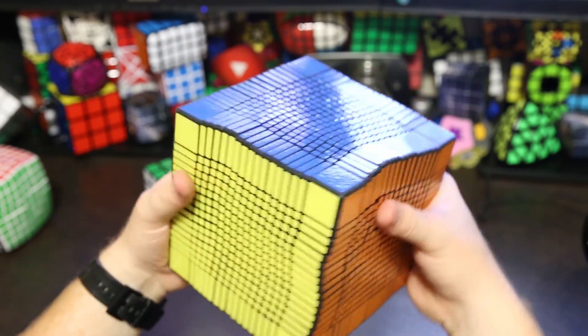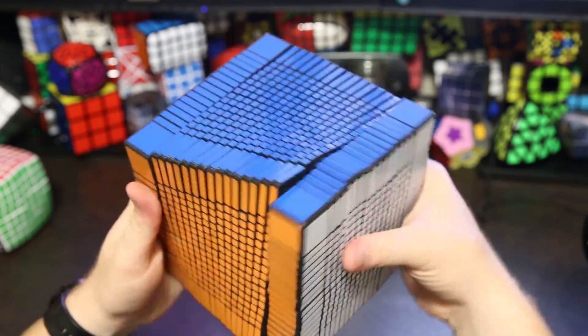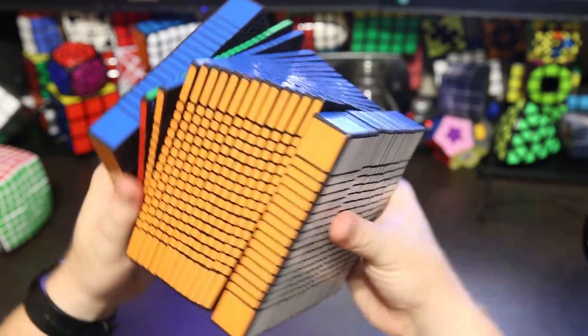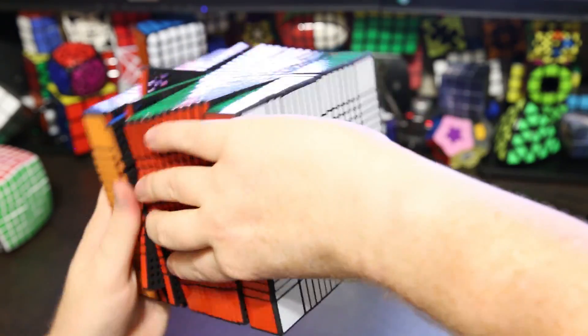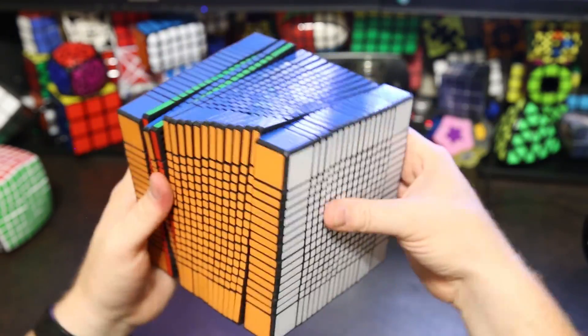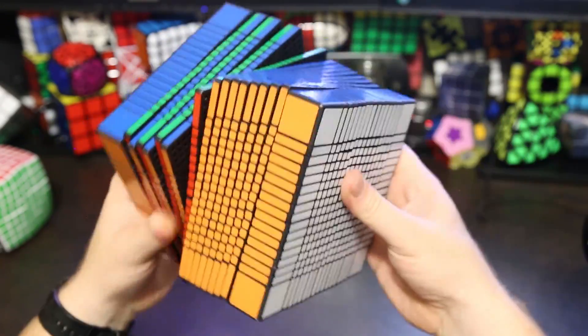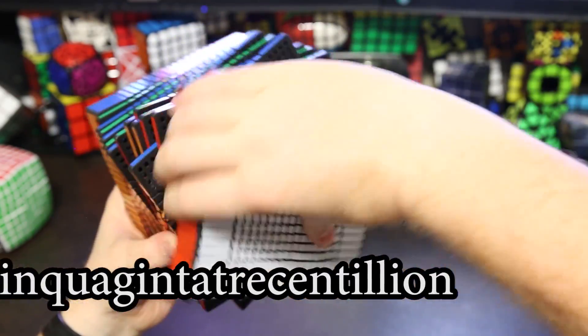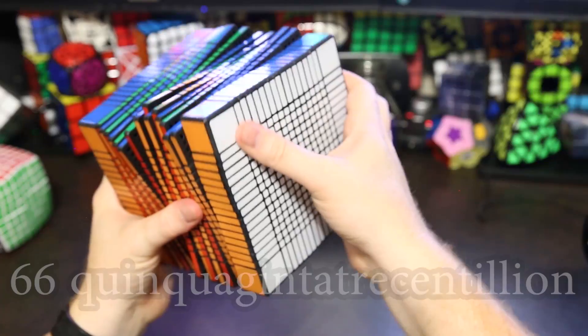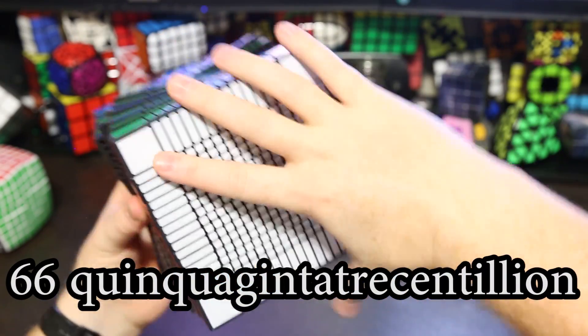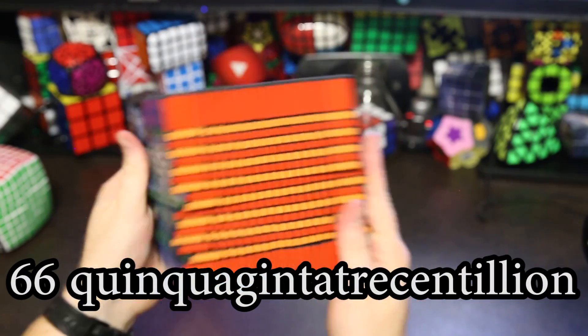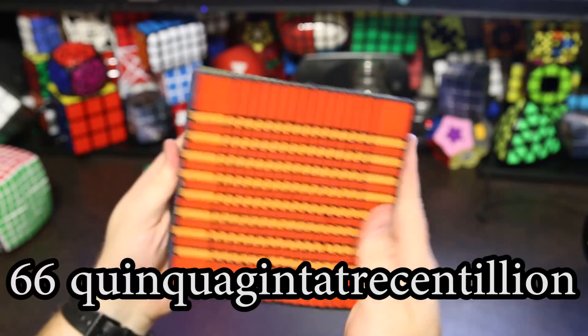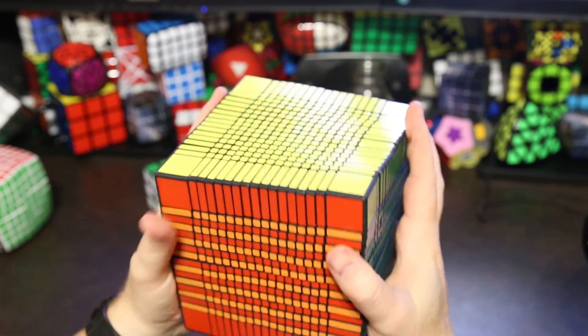So how many positions in a 17x17? Well, let me read the actual number. I like to do this. I've done it for the 3x3 and 7x7. So for the 3x3, there's 43 quintillion positions. For the 7x7, there's 19 duoquinquagintillion positions. And for the 17x17, there's 66 quinquagintillion positions. And I practiced saying that number. It took me a lot of tries to say that.